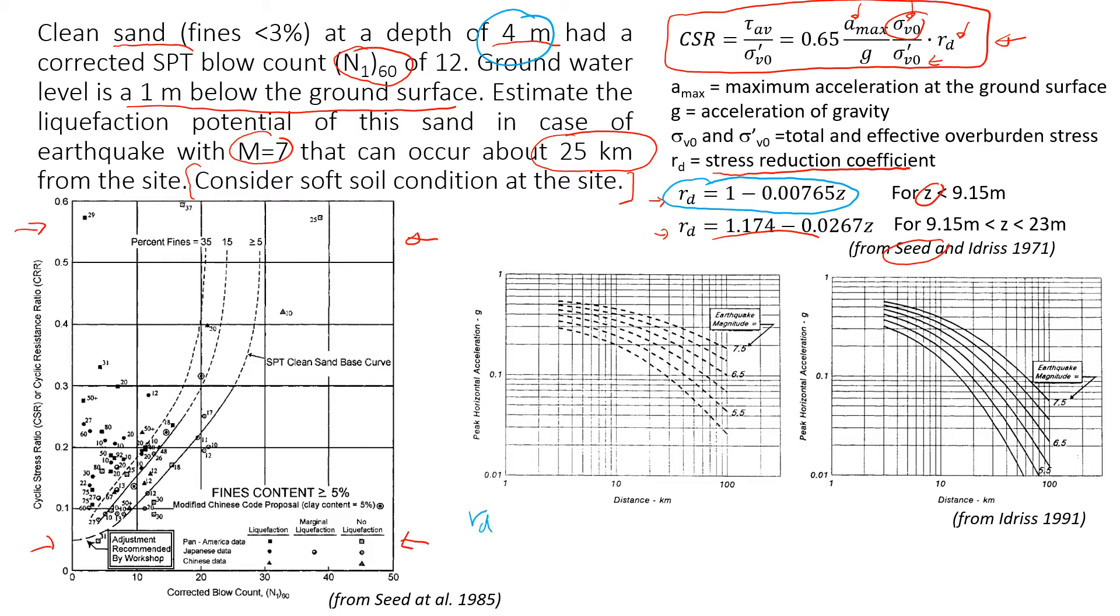So this coefficient will be equal to 1 minus 0.00765 times four meters, so that will give us approximately 0.969.